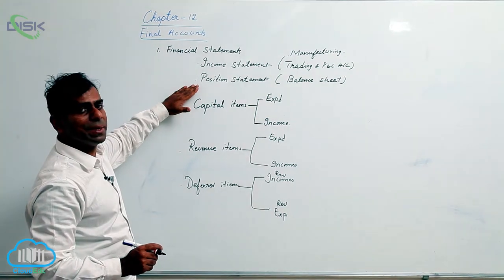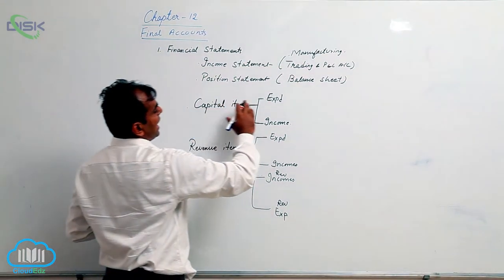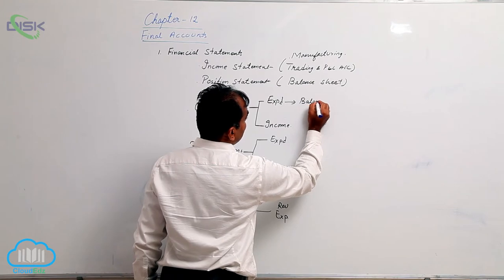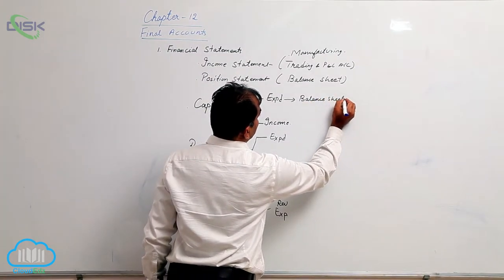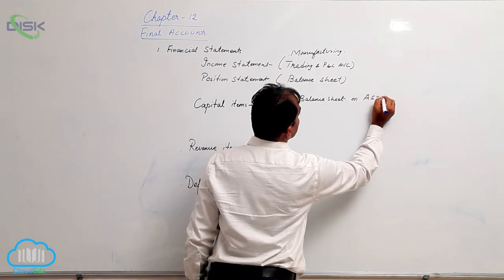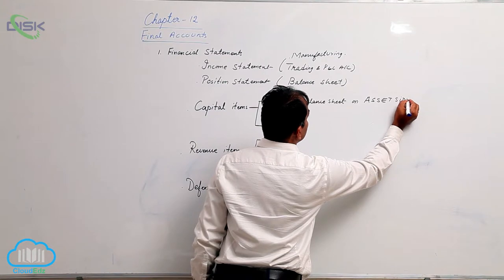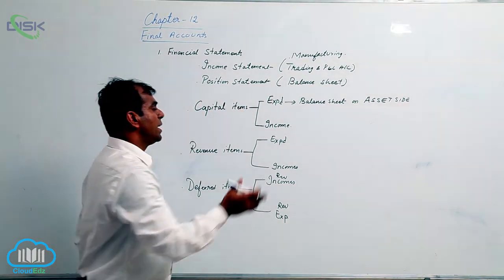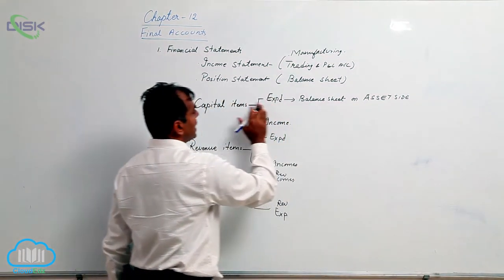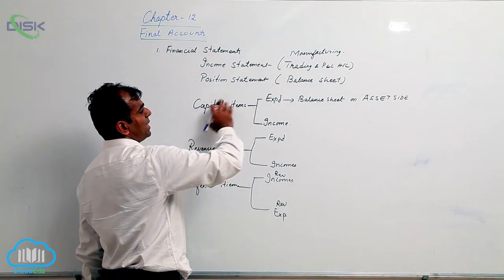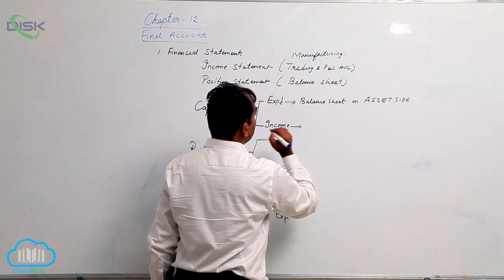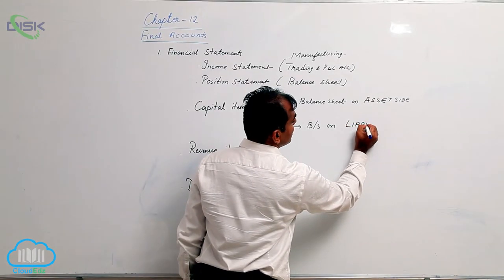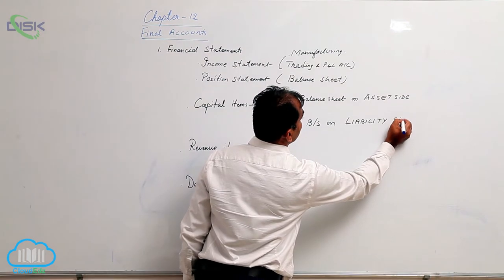If it is a capital expenditure, you will be taking it in the balance sheet on the asset side. The balance sheet has two sides — the asset side and the liability side — and is based on the accounting equation. Capital incomes are taken on the liability side of the balance sheet.